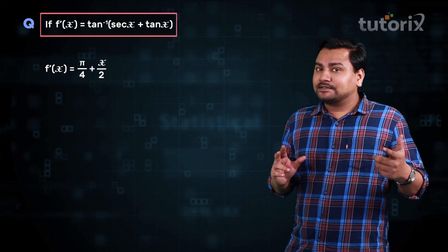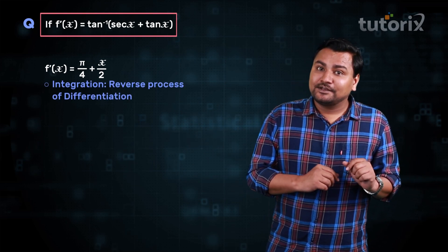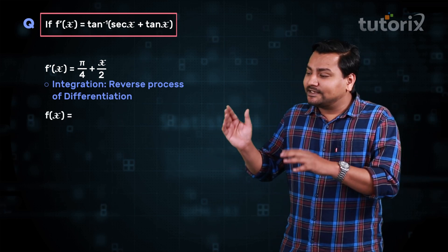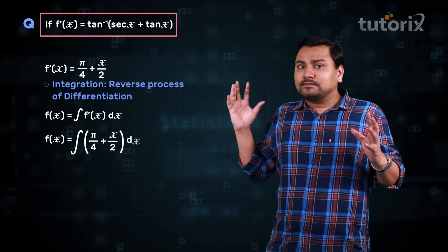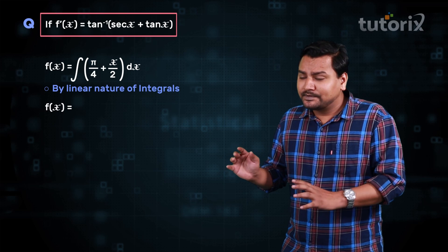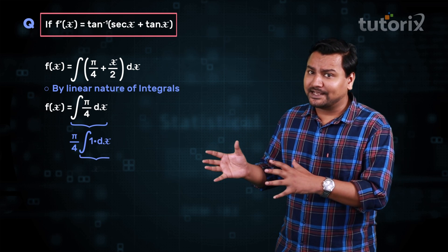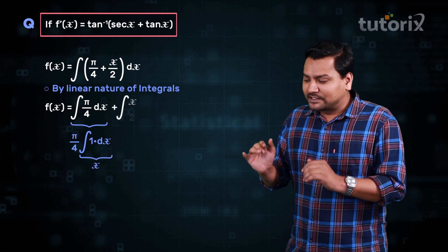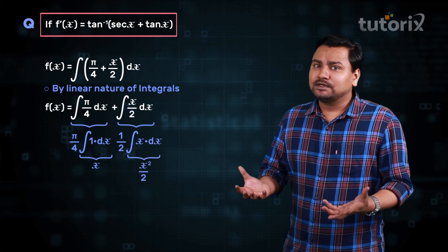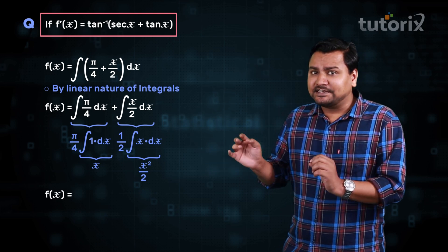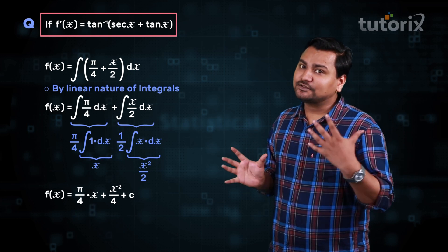Now we need to calculate f(x). Since integration is the reverse process of differentiation, f(x) is basically the integral of f'(x). With f'(x) equal to π/4 plus x/2, by linearity of integrals this is the integral of π/4 plus the integral of x/2. That gives π/4 times x plus x²/4 plus c, where c is the constant of integration.